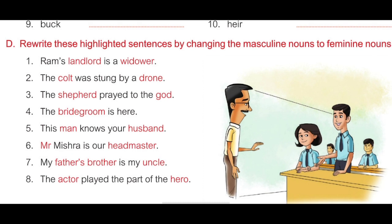Rewrite these highlighted sentences by changing the masculine nouns to feminine nouns. First: 'Ram's landlord is a widower.' Answer: 'Ram's landlady is a widow.' Second: 'The colt was stung by a drone.' Answer: 'The filly, F-I-L-L-Y, was stung by a bee, B-E-E.' Third: 'The shepherd prayed to the god.' Answer: 'The shepherdess, S-H-E-P-H-E-R-D-E-S-S, prayed to the goddess.'